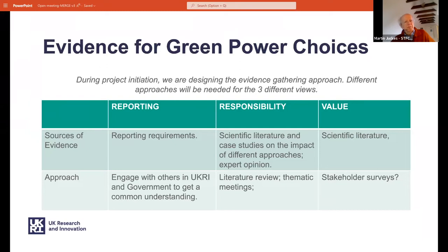In terms of evidence for green power choices, when looking at the three different views, there are slightly different types of evidence relevant to each. For the reporting view, it's quite straightforward — there are reporting requirements, and at the moment DEFRA and BEIS have slightly different requirements in terms of what they define as green electricity; DEFRA's requirements are quite permissive, and BEIS requirements are much more restrictive. In terms of responsibility, we can look at the scientific literature and case studies on the impact of different approaches and get a range of expert opinion, and similarly for the value view.